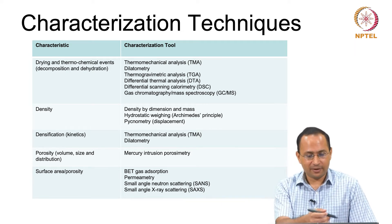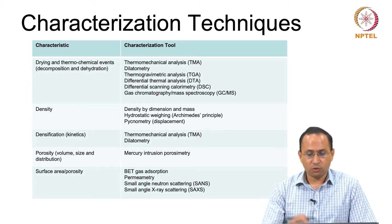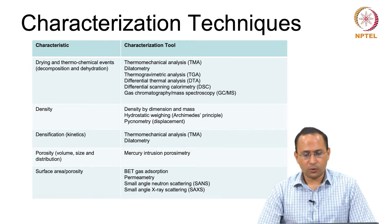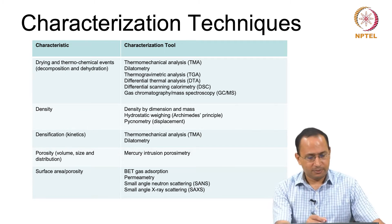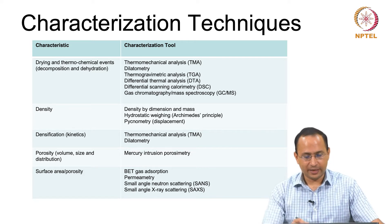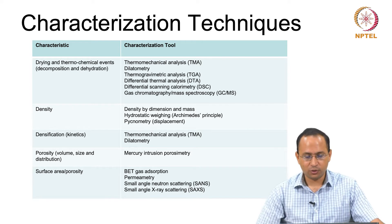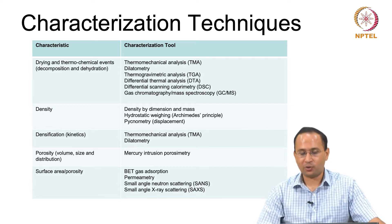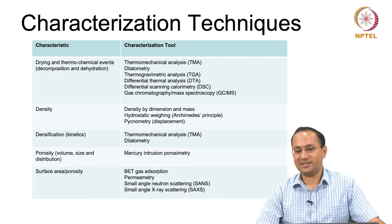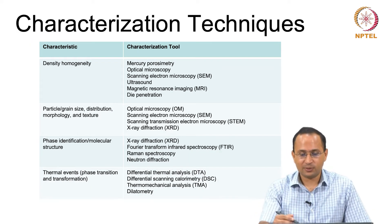I have listed techniques, characteristics, and corresponding characterization tools which are available. We will be covering a few of these techniques during the course. For surface area, we will be covering BET gas adsorption, but you can also use permeametry, small angle neutron scattering, and small angle X-ray scattering. These are the tools we have at our disposal.